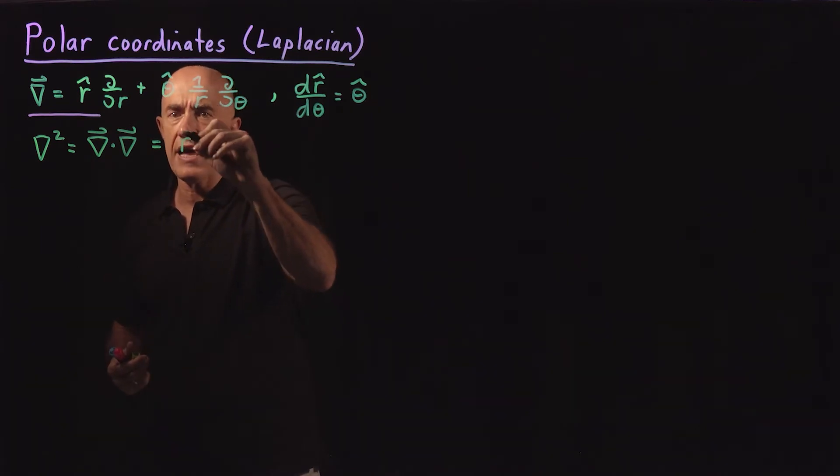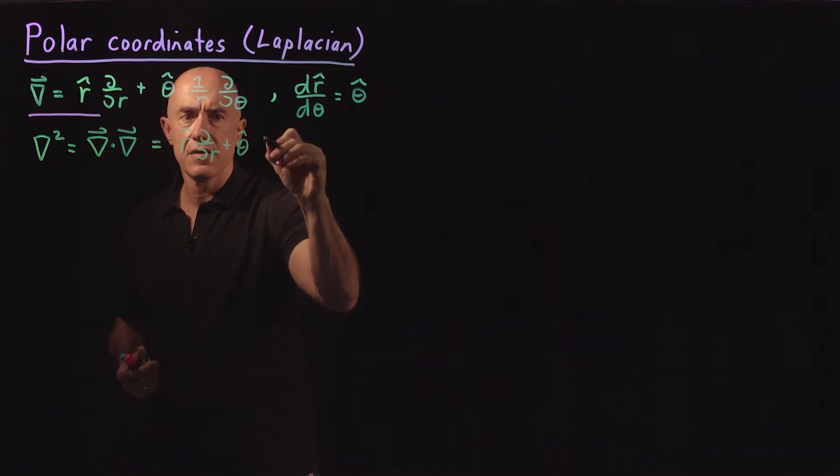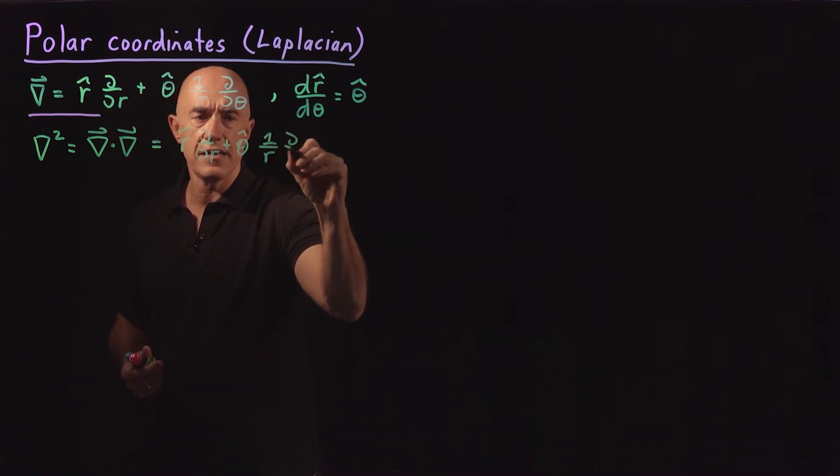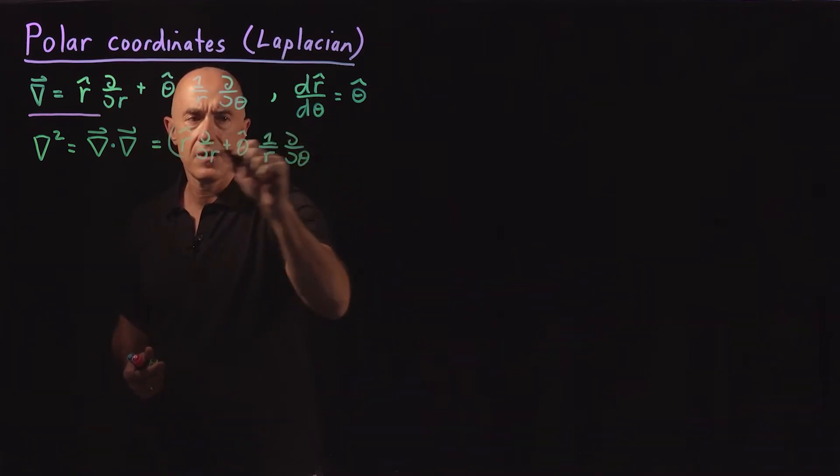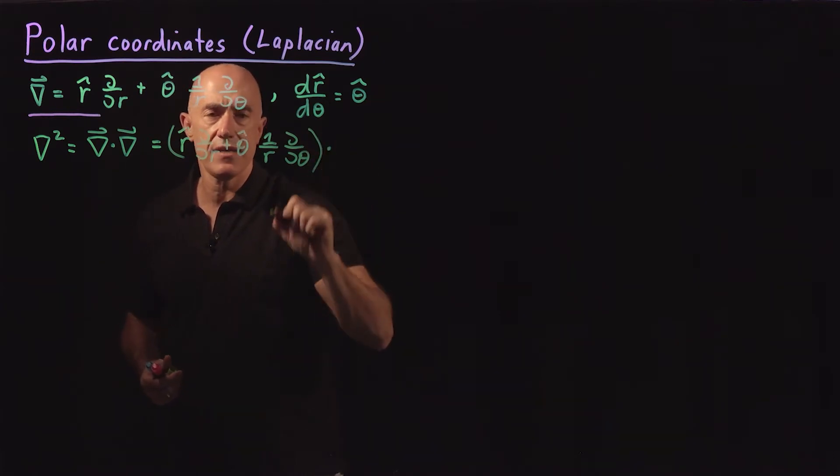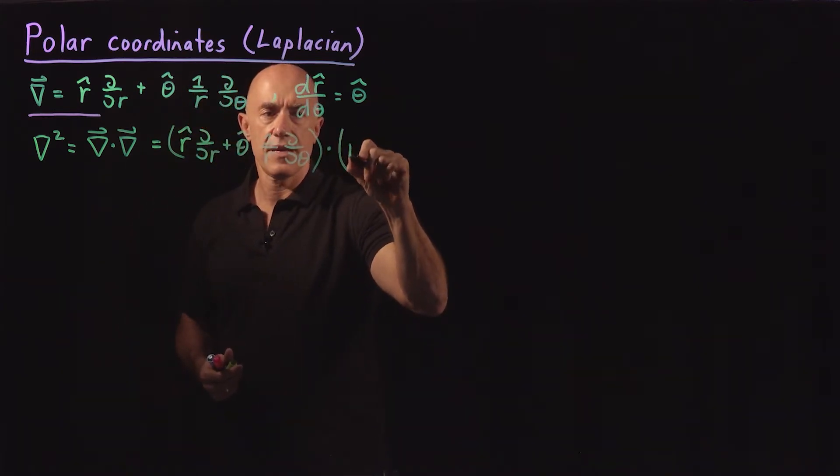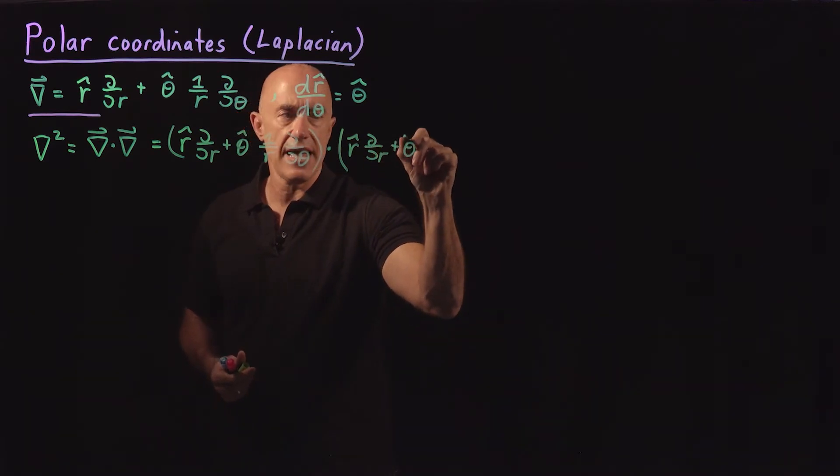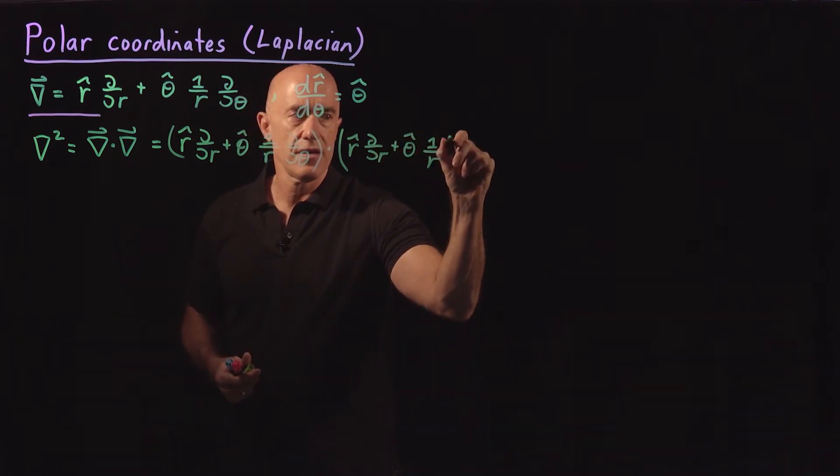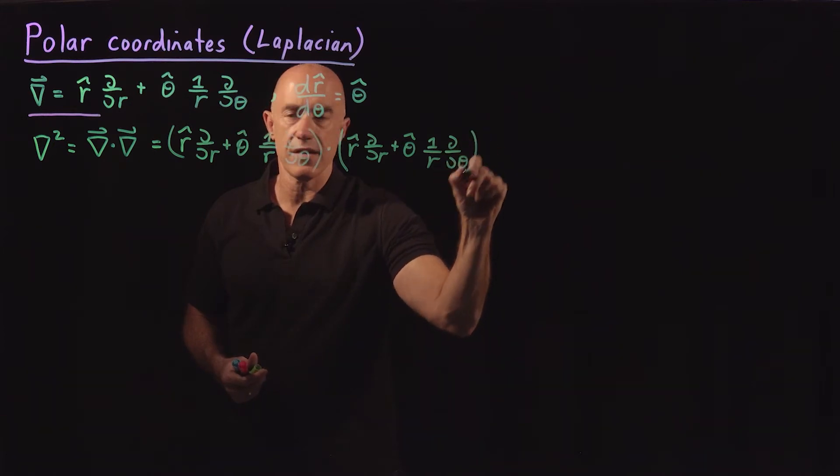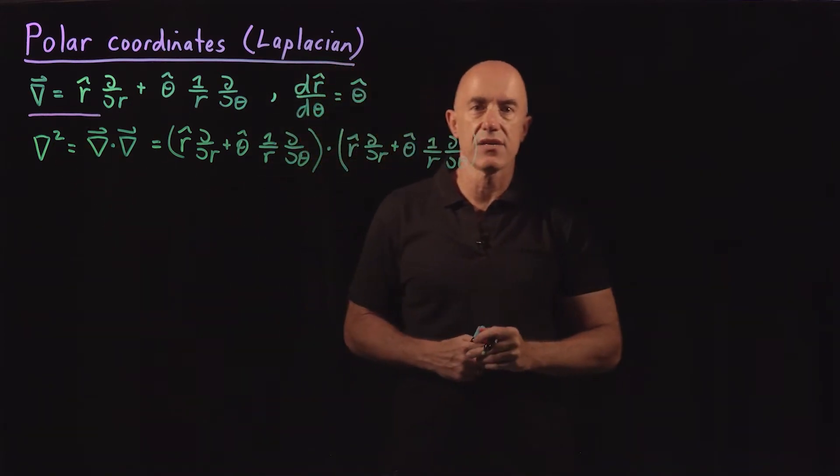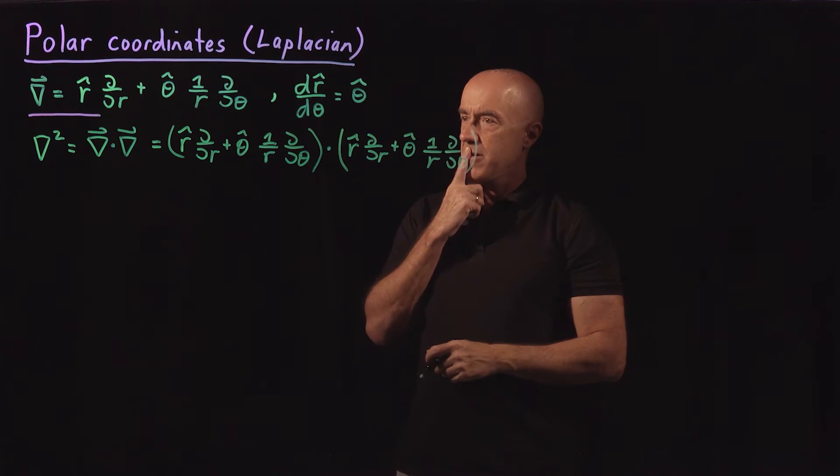This would be r hat d/dr plus theta hat 1 over r d/dθ, dotted against itself. So r hat d/dr plus theta hat 1 over r d/dθ. And that will give us this del squared operator.